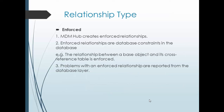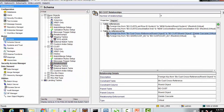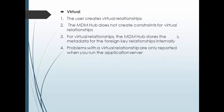Regarding relationship types: MDM hub creates enforced relationships, which are enabled by default. Enforced relationships are database constraints — for example, the relationship between a base object and its cross-reference table is enforced, so you do not need to create it manually. It is automatically created and provided by Informatica MDM. Problems with enforced relationships are reported from the database layer, so any error will be a database-level error.